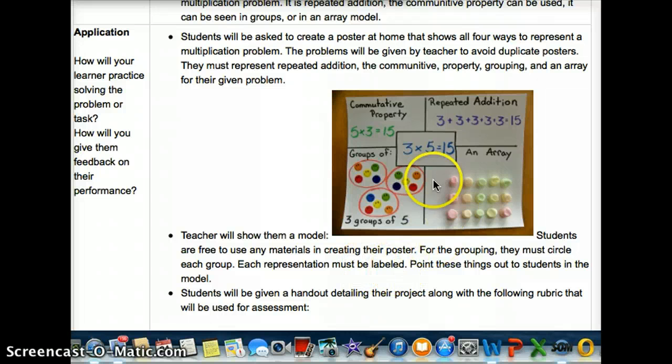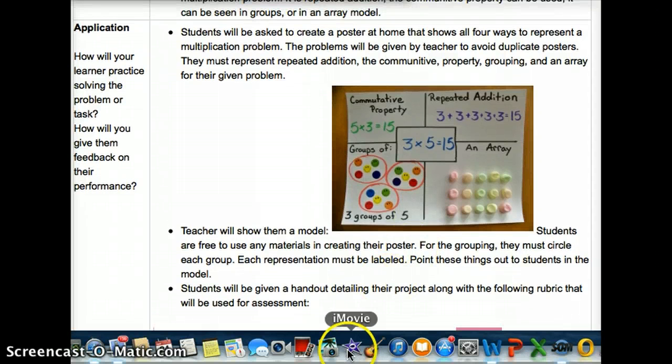For the grouping, they must circle each group, as I have here. They must label each of the ways. So we have the commutative property, repeated addition, the groups, three groups of five, and an array. Make sure we point these things out to the students so that it reiterates that that's what their expectations are. And they will also be given a handout with instructions and the following rubric.